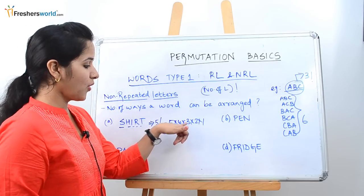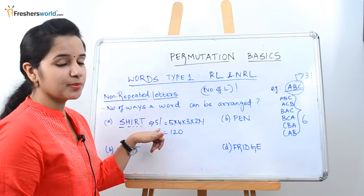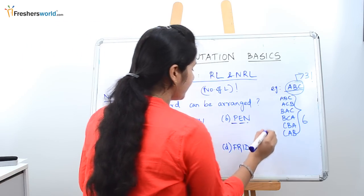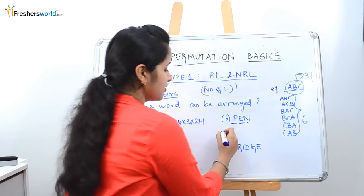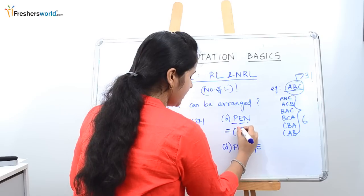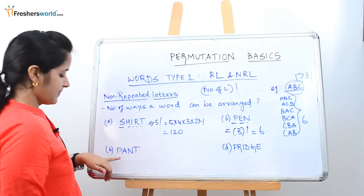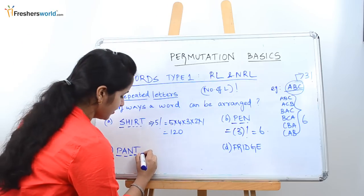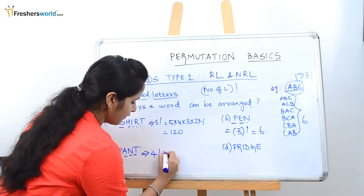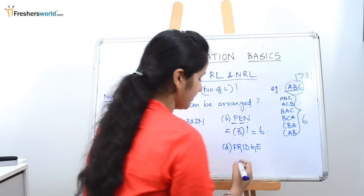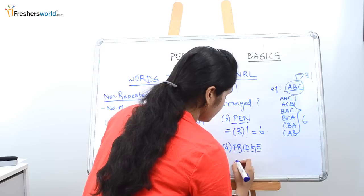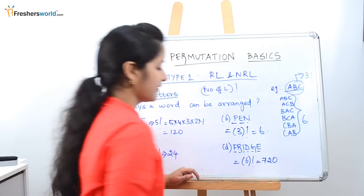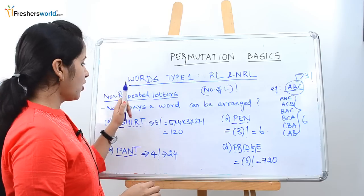When you ask how many ways a word can be arranged, it is the number of letters in the word followed by the factorial. So for SHIRT with five letters, the answer is five factorial, which is 120. Always remember to memorize factorials from one factorial to seven factorial. For PEN with three letters, three factorial is six. For PANT with four letters, four factorial is 24. For a six-letter word, six factorial is 720. This is the way non-repeated letters can be arranged.